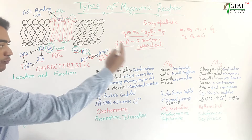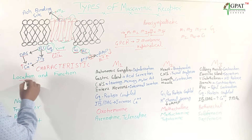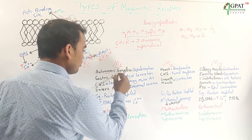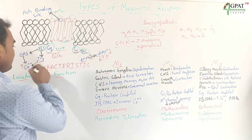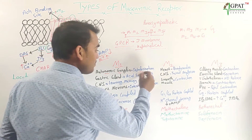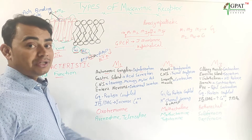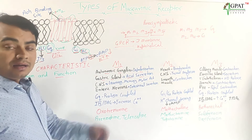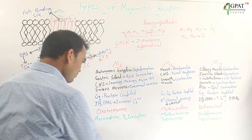Now let's discuss the characteristics of the three major muscarinic receptors: M1, M2, M3 — their locations and functions. M1 receptors are mainly located in the autonomic ganglia. There, the IP3/DAG pathway leads to increased calcium ion, which carries out depolarization. At the gastric gland, M1 activation leads to contraction and increases acid secretion — that is, hydrochloric acid secretion increases.